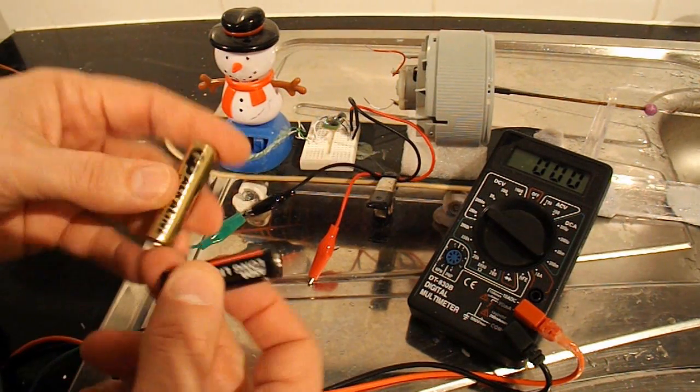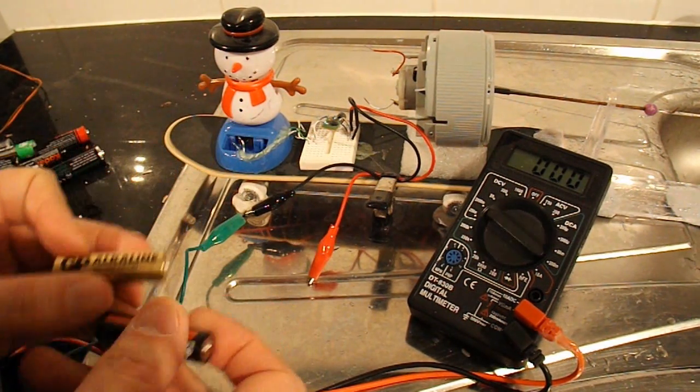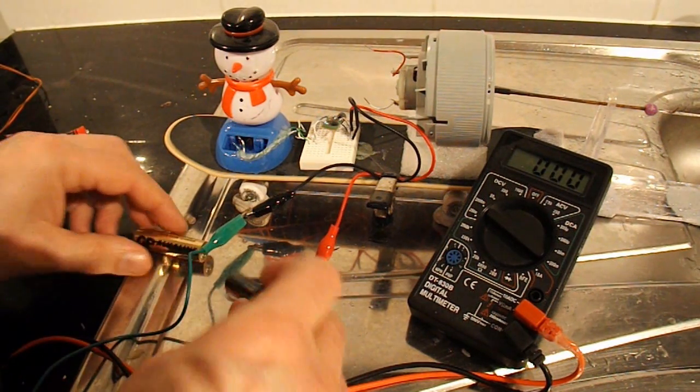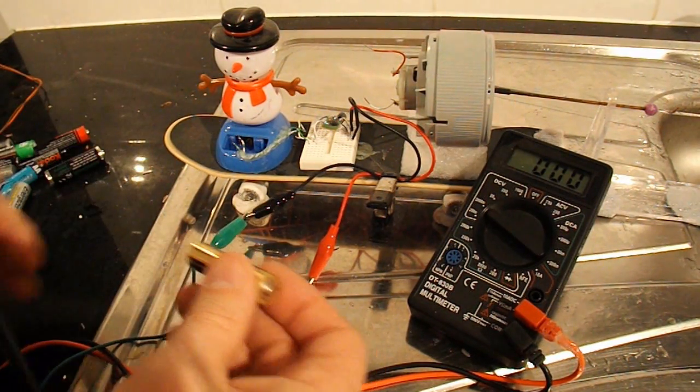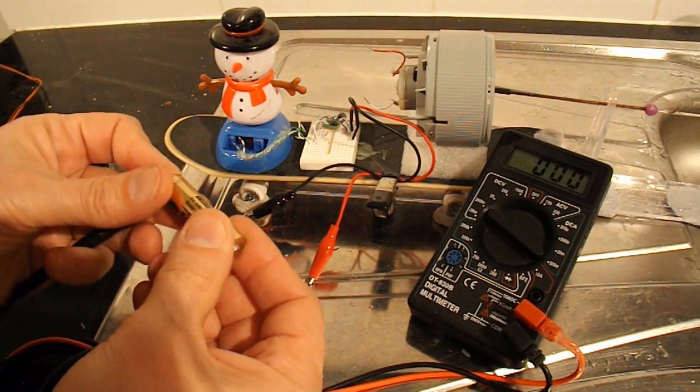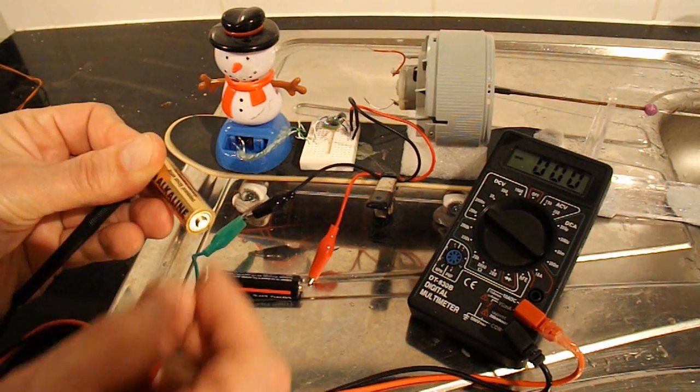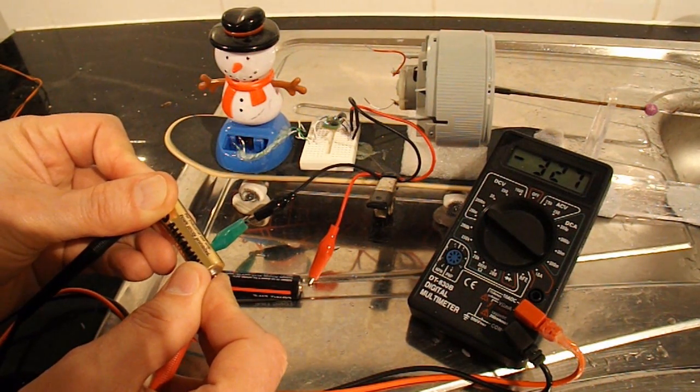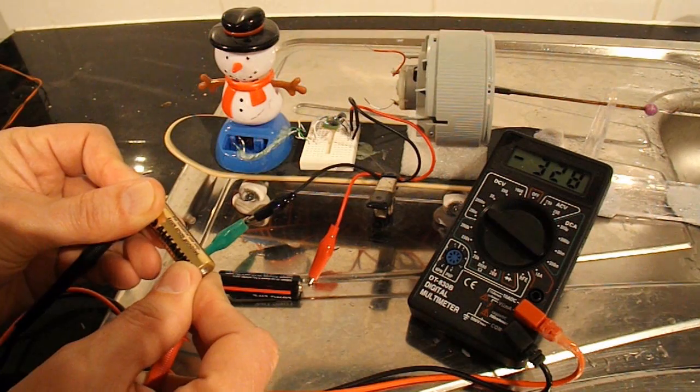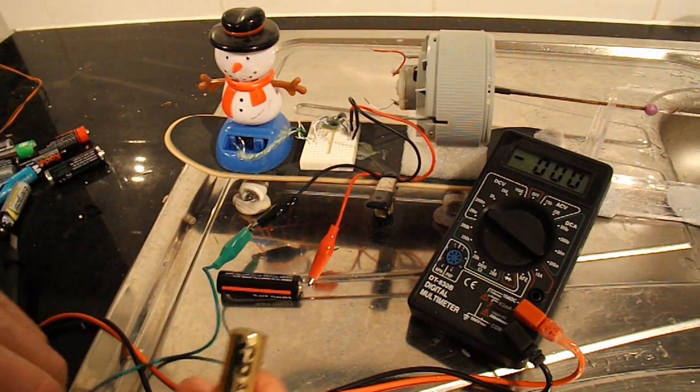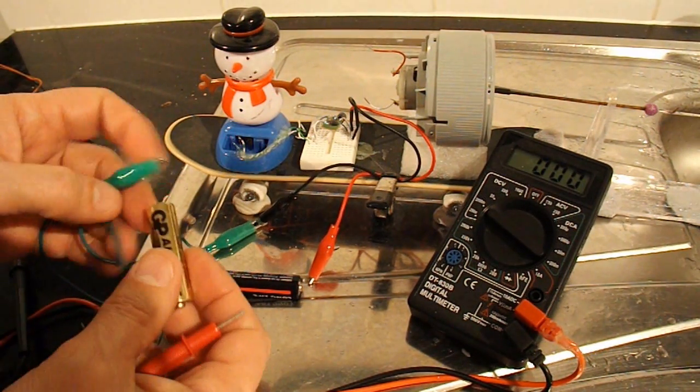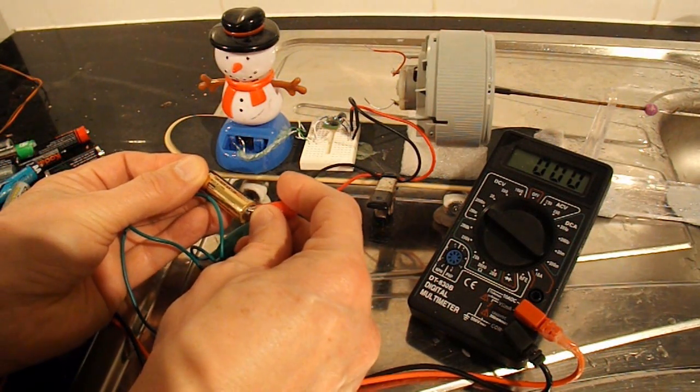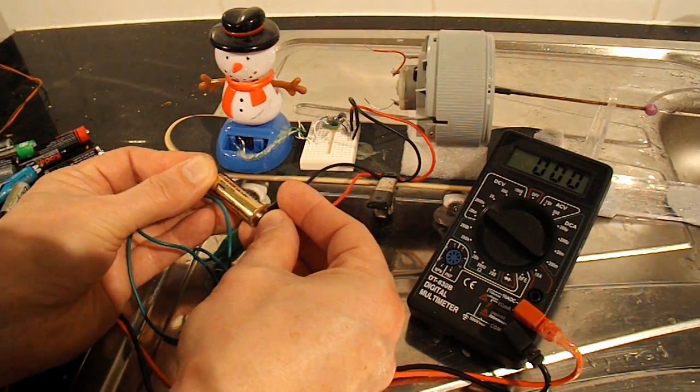I've got two fairly dead batteries from my stock of dead batteries. If we measure this one first, that's giving us 327 millivolts. If I connect him onto the snowman, nothing's happening.